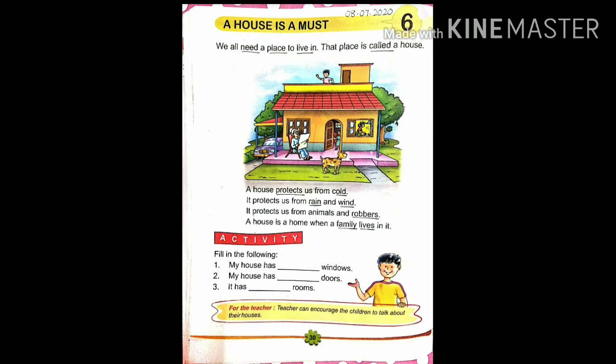As you can see, there is a big picture of a house. यहाँ पर एक बेटा house की बड़ी सी picture बनी हुई है. A house protects — protects means सुरक्षा करना या रक्षा करना — us from cold. Cold means सर्दी. House protect us from cold. जो house होते हैं बेटा, वो हमारी protection करता है, हमें protect करता है सर्दी से.